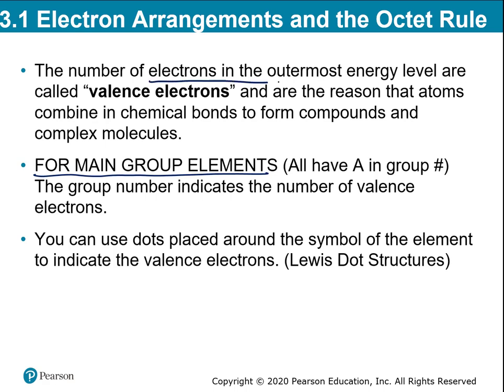The number at the top in front of the capital A tells you how many electrons in the outer shell — those are called valence electrons. Dr. Lewis studied atoms, electrons, and how they form molecules. He said an easy way to indicate the number of electrons in the outermost shell is by using dots. For hydrogen, you would just have one dot — one dot on any side of the hydrogen symbol — because it's in group one. Just one dot.